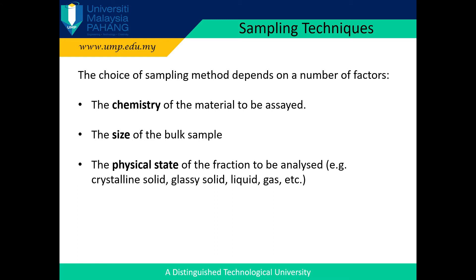A whole cross-section should be taken for each sample. For a pile of material, to obtain a random sample, the sampling must use identical methods. The choice of sampling method depends on a number of factors: first, the chemistry of the material to be assessed; the size of the bulk sample; and the physical state of the fraction to be analyzed, whether they are crystalline solid, glassy solid, liquid, gas, etc.